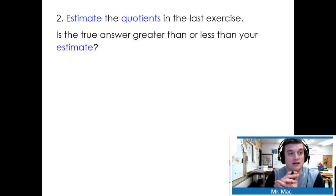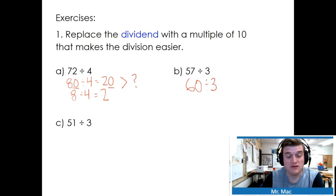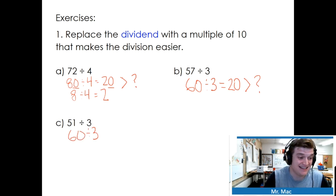Try the next two. Estimate the quotients in the last exercise. Is the true answer greater than or less than your estimate? Is 80 greater than or less than 72? 80 is greater than 72. So we know our quotient is going to be greater than the actual answer. 60 is greater than 57. So we know that the quotient is going to be greater than our actual answer. Again, 60 is greater than 51. We know that the estimate is going to be greater than the actual.